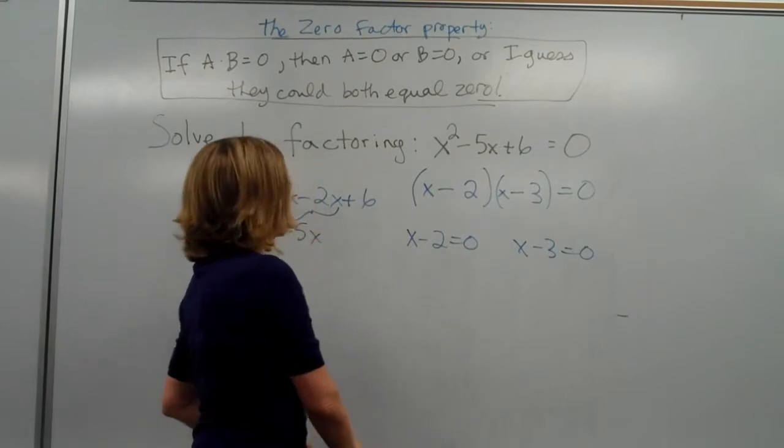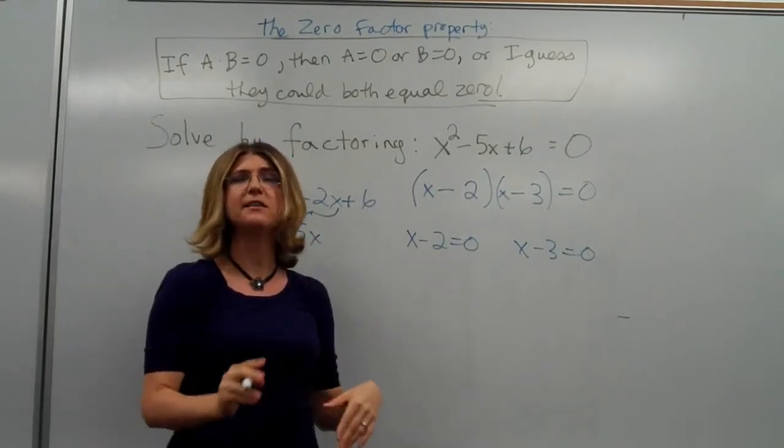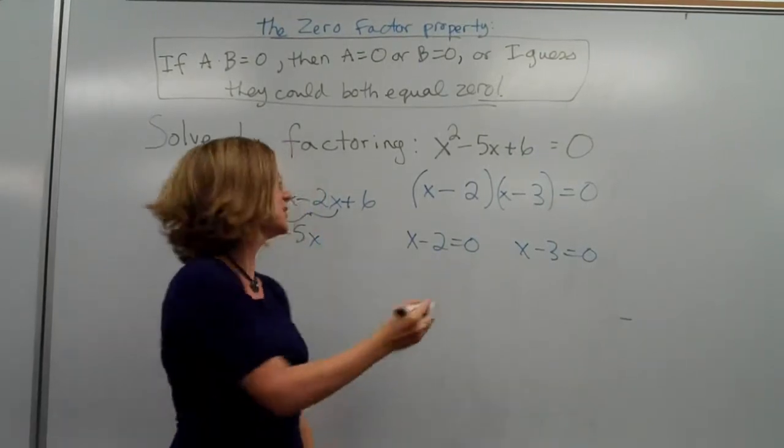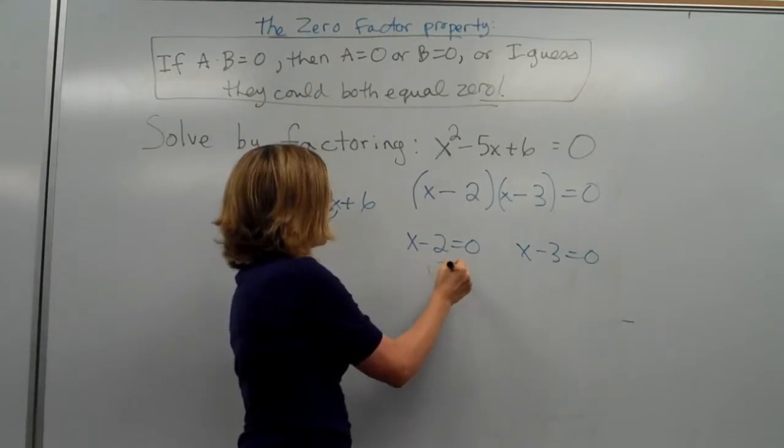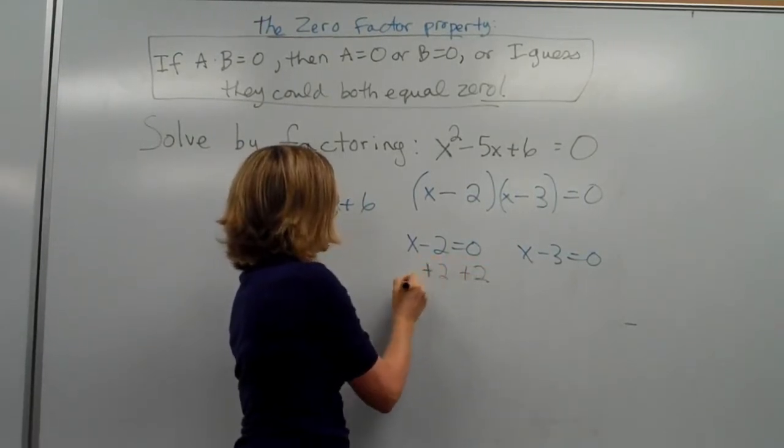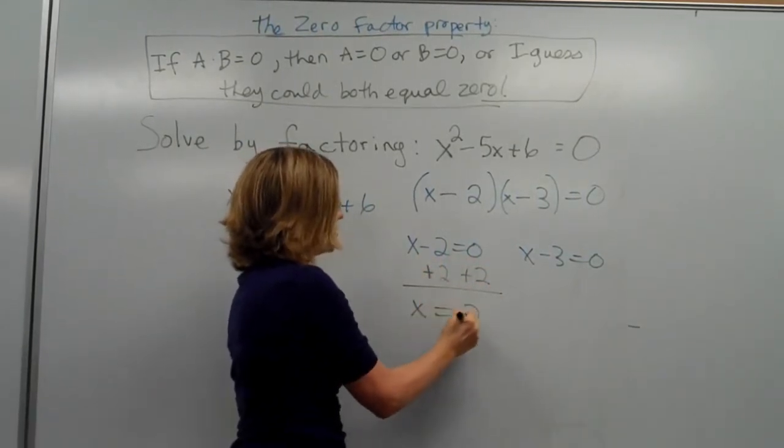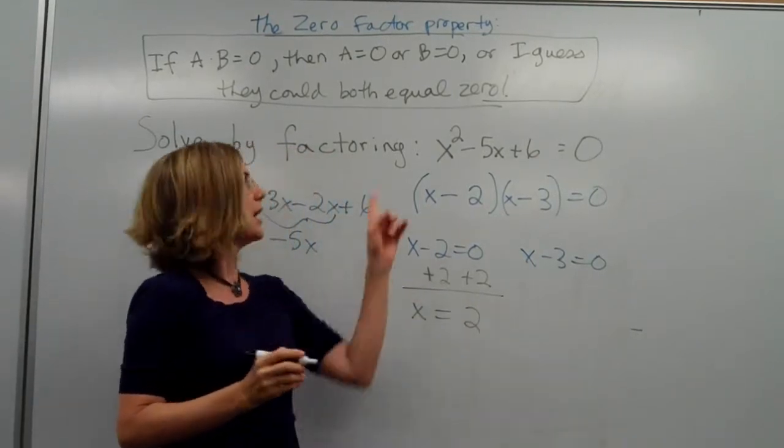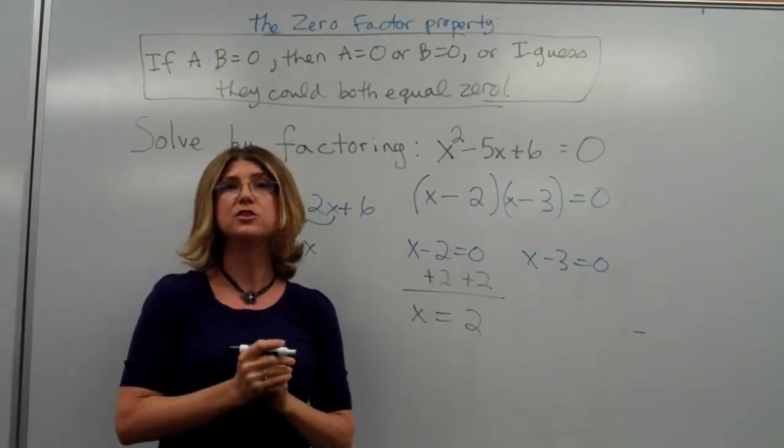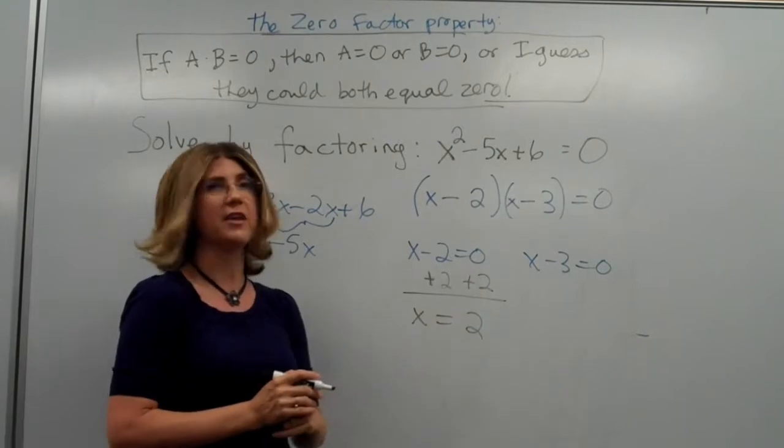So, x minus two equals zero. Since we're subtracting two from x, we have to undo subtracting two, so we add two. Of course, in math, we do that on both sides, which gives us x equals two as one solution. But in a quadratic equation, we're expecting two solutions.